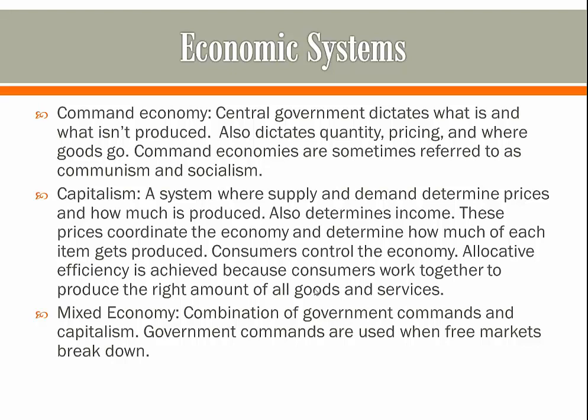The second type is called capitalism. In capitalism, the market determines prices, quantities, and who gets what without governments at all. These prices coordinate the economy, and the controllers of this economy are consumers. They're able to achieve allocative efficiency because consumers work together to produce the right amount of goods and services.